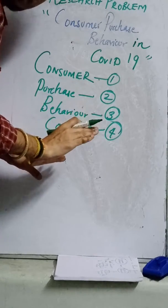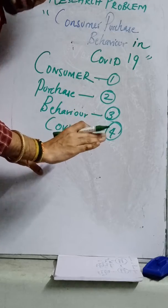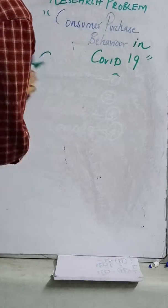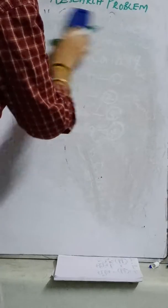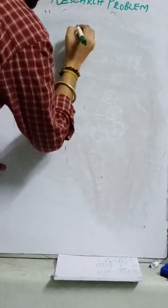The first step is nothing but take a title, your research title, your own research title, break it into different types of components and see what are all the different types of themes associated in your study. Are you clear with the very first step? Shall I proceed with the second step?